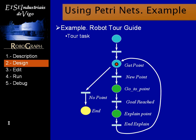This is the sequence that the dispatch will execute for the case of two points like our example. First, dispatch will get the next point from the list. If there is a new point, it will start the go to point Petri Net that will command the robot to go to point 1. The parameters for the go to point Petri Net are the point coordinates. When the go to point Petri Net ends, the explain point Petri Net will be started with the audio file name as a parameter. Once the audio file has been reproduced, a new point will be extracted from the list.